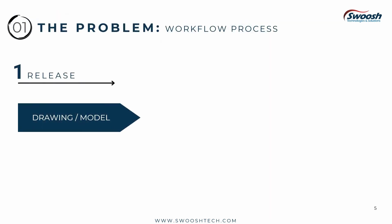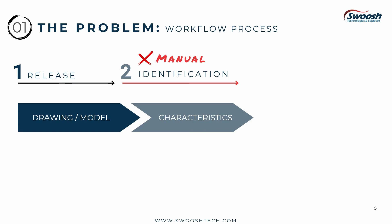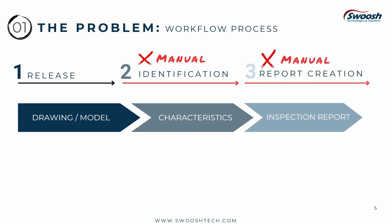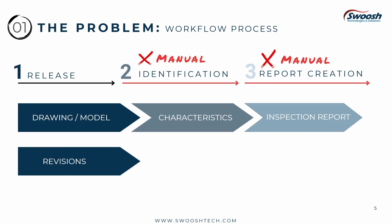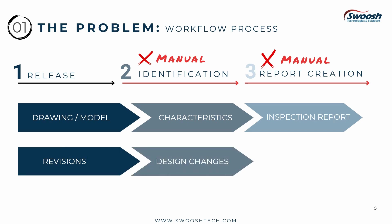Typically after models and drawings are released, ballooning the design characteristics need to be added to the print or model. This typically is a manual process for a lot of companies. Next, the inspection report needs to be created — again, this process is usually manual as well, by entering information into a spreadsheet or paper form. Then design changes or revisions come along and this manual process starts over, re-ballooning the print or model and recreating the inspection report.